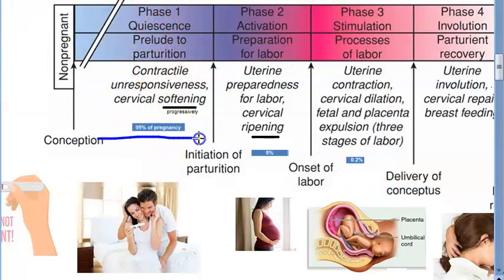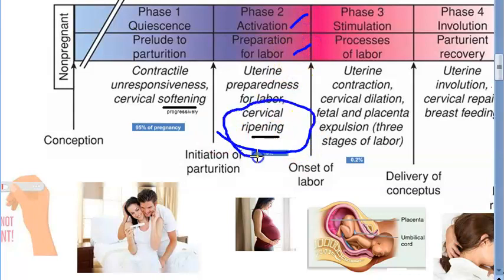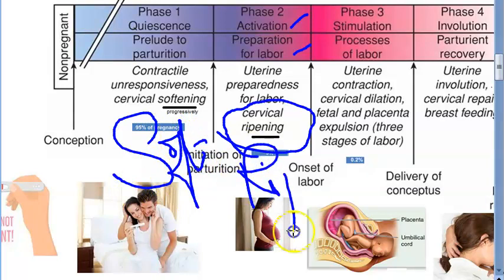Moving on to activation — phase two — it is preparation for labor. There you will have cervical ripening. First you had softening of the cervix, now there will be ripening of the cervix.